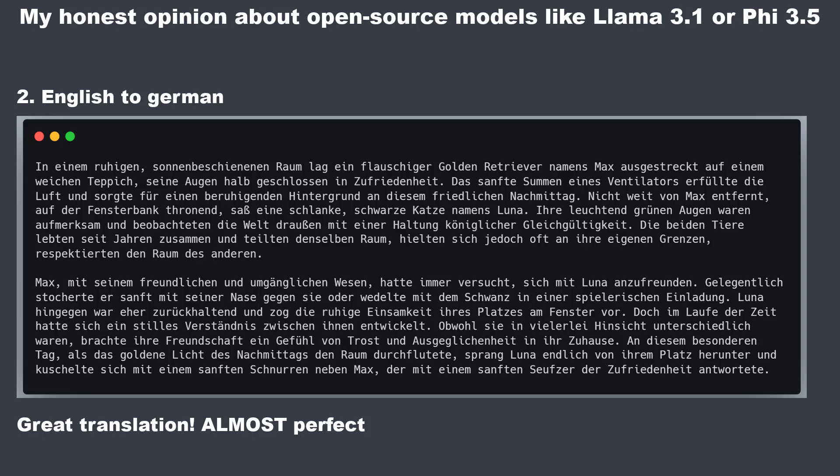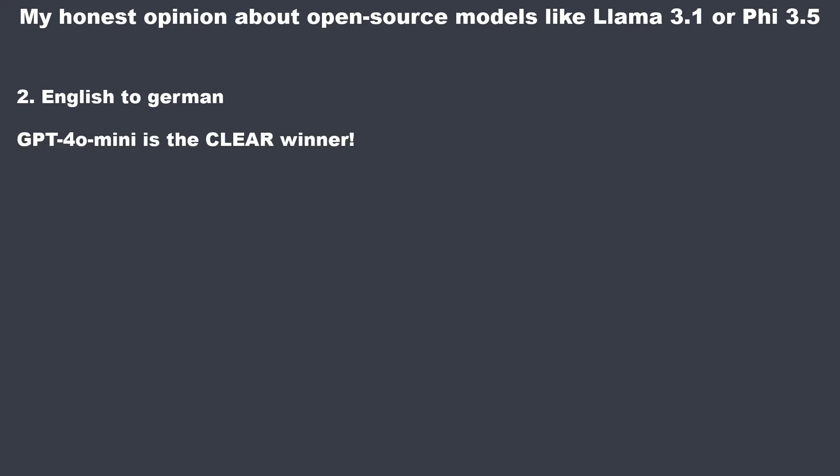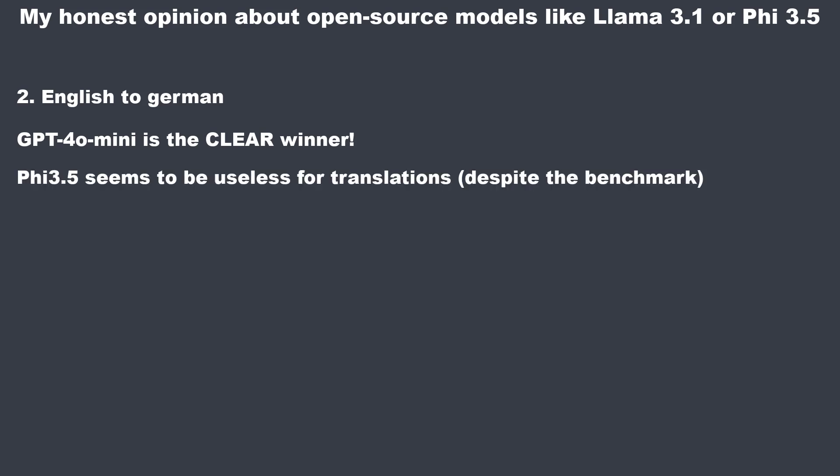So in this comparison we have a clear winner and a clear loser. GPT-4O mini is a very good model for translating text and makes no obvious mistakes, but PHY 3.5 is just not usable for translation — the quality is ridiculous. To be honest, I'm actually quite shocked by the result.